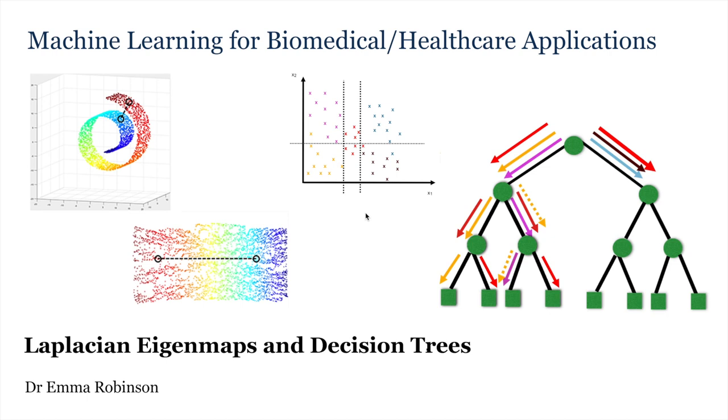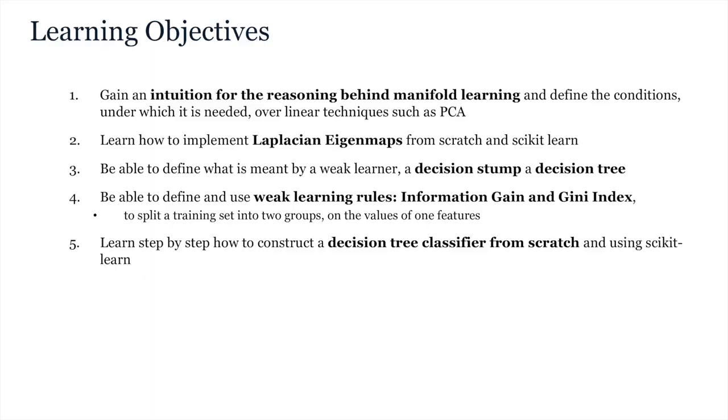Then we will move on to look at weak learners, in particular decision trees, which are an essential component of ensemble learning methods. So this is rather a week and two halves. For the first part, Laplacian eigenmaps, there will be one video lecture supported by a short formative exercise to be completed in your IDE and followed by a quiz.